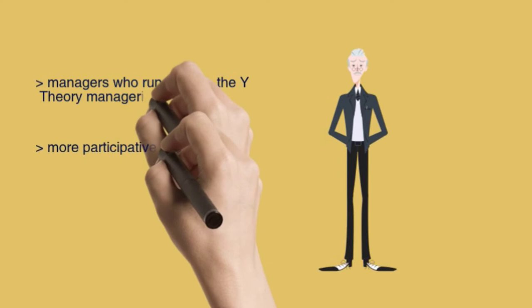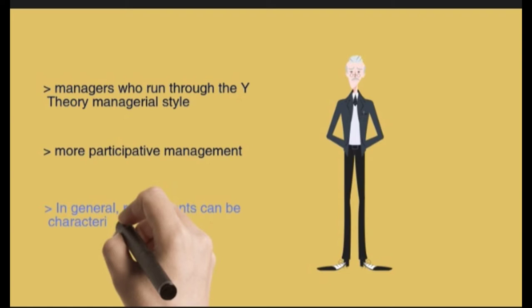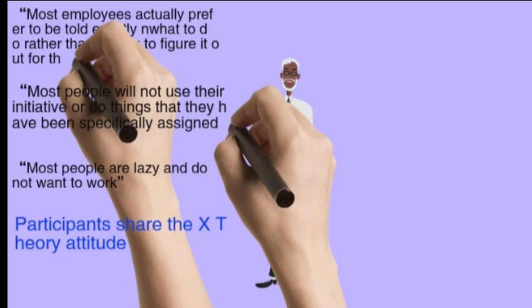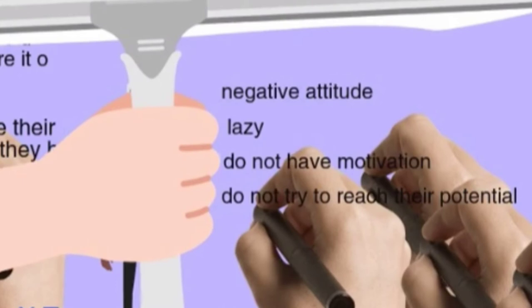Respondents prefer more participative management, meaning they like managers who take risks and use appropriate position structures that allow employees space and possibility for personal development. In general, respondents can be characterized as more positive because they believe that people are self-motivated by things that challenge them and strive for higher personal accomplishments. Yet, minor statements — such as statement 5 (most employees prefer to be told exactly what to do), statement 7 (most people will not use their initiative), and statement 24 (most people are lazy and do not want to work) — indicate that some survey participants share a Theory X attitude, characterized by a negative view of others as lazy, unmotivated, and not striving to reach their potential.